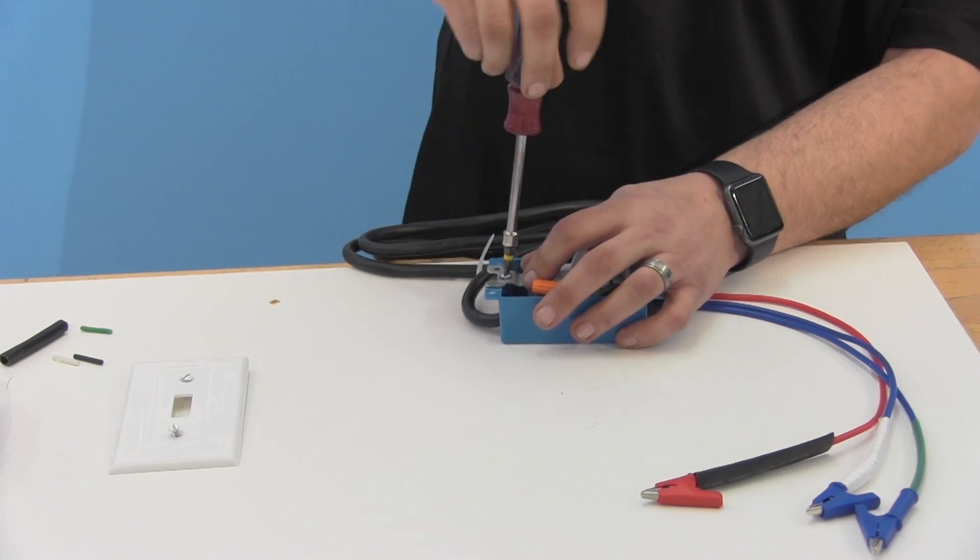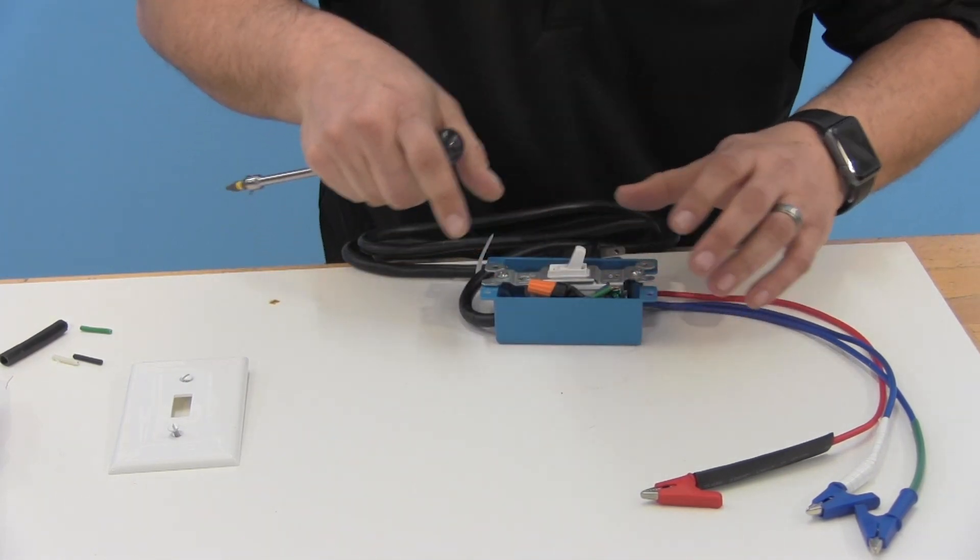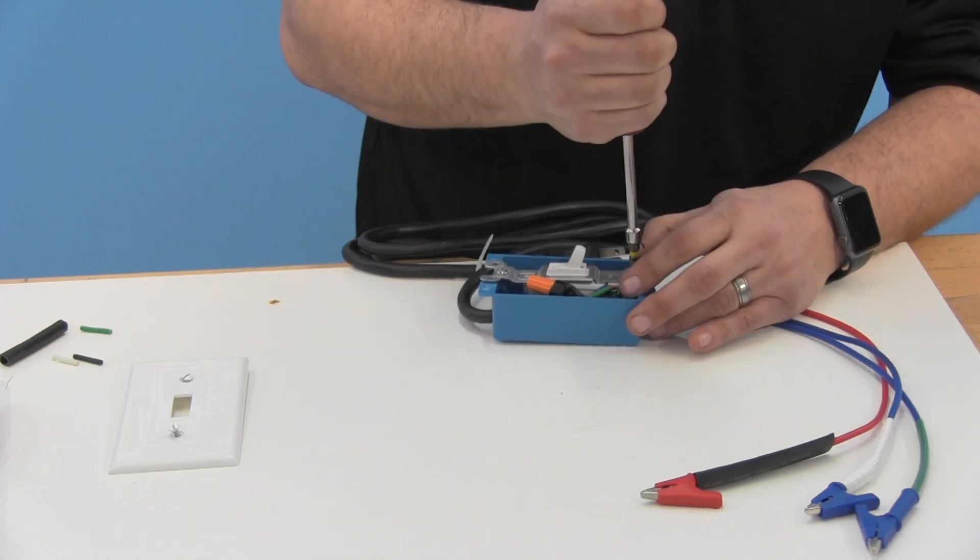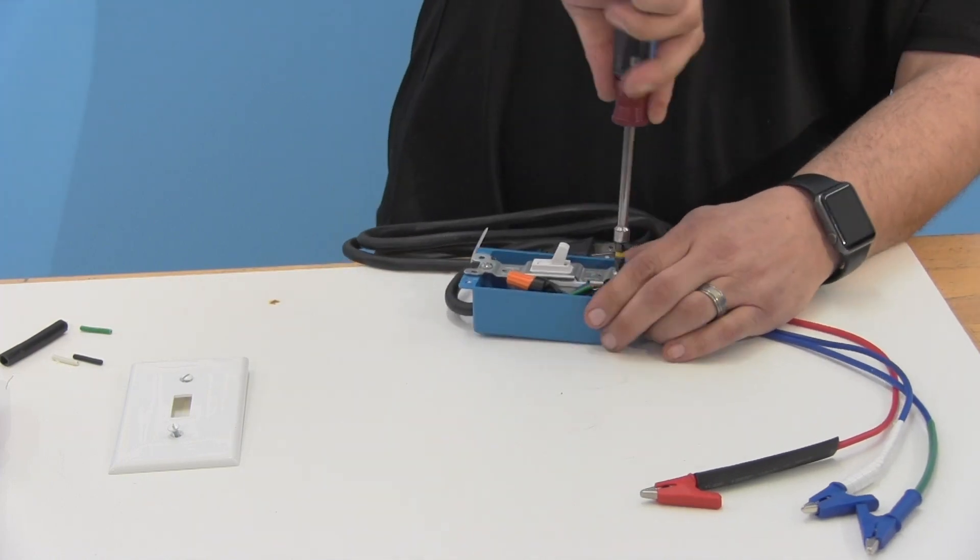Before tightening down all the way, make sure the wires are not touching each other, squeezed, pinched, and then go ahead and tighten the rest of the way down until it's tight.